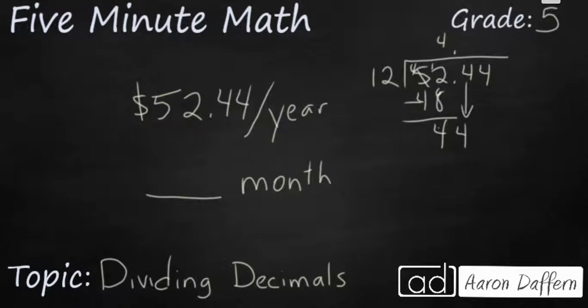12 goes into 44 almost 4 times, but not quite 4 times. It's going to have to be 3 times because 4 times 12 is 48, and that's too big. So, it's going to be 3 times 12. That is 36. That's going to leave us with 8. Let's bring down this 4. 12 goes into 84 seven times, and that's going to leave us with no remainder, which is good. So, it looks like our answer is going to be $4.37.